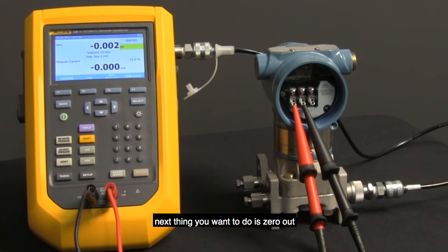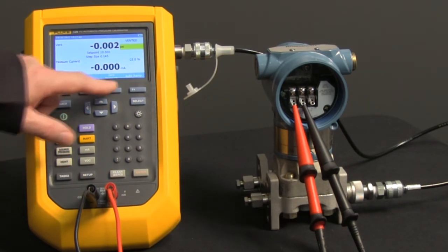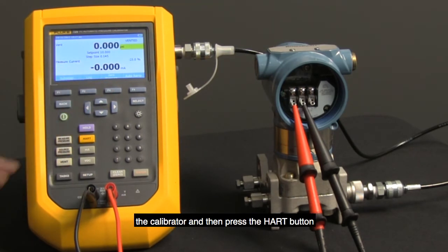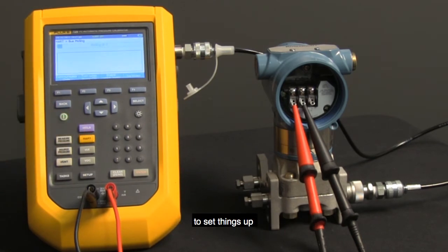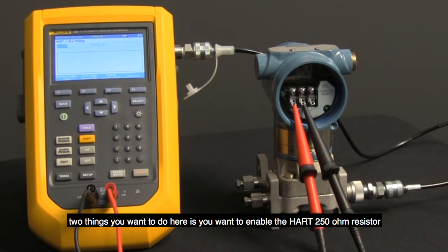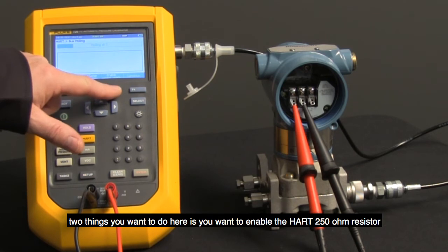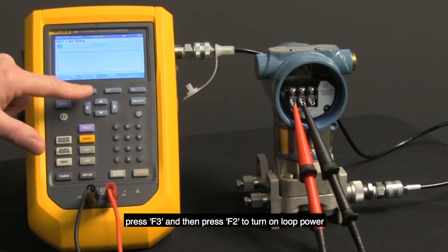Next thing you want to do is zero out the calibrator and then press the HART button to set things up. Two things you want to do here: enable the HART 250 ohm resistor, press F3, and then press F2 to turn on loop power.